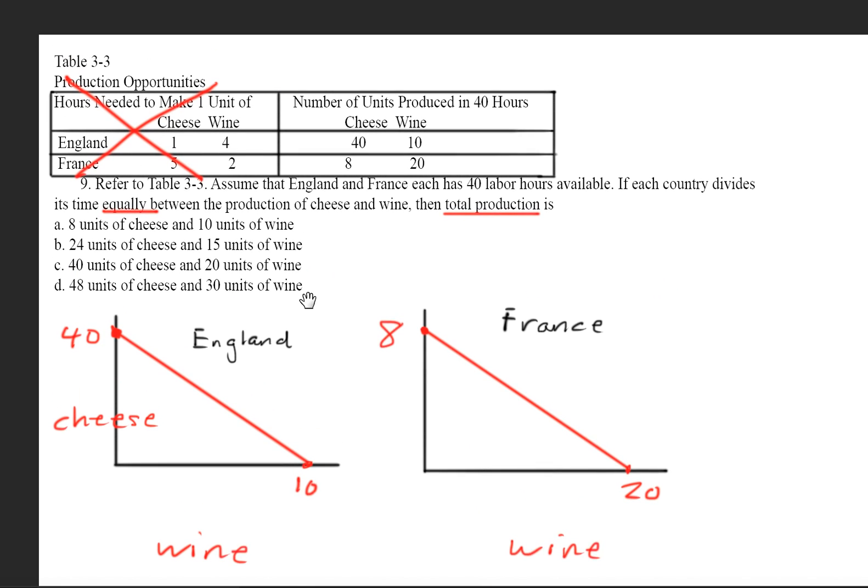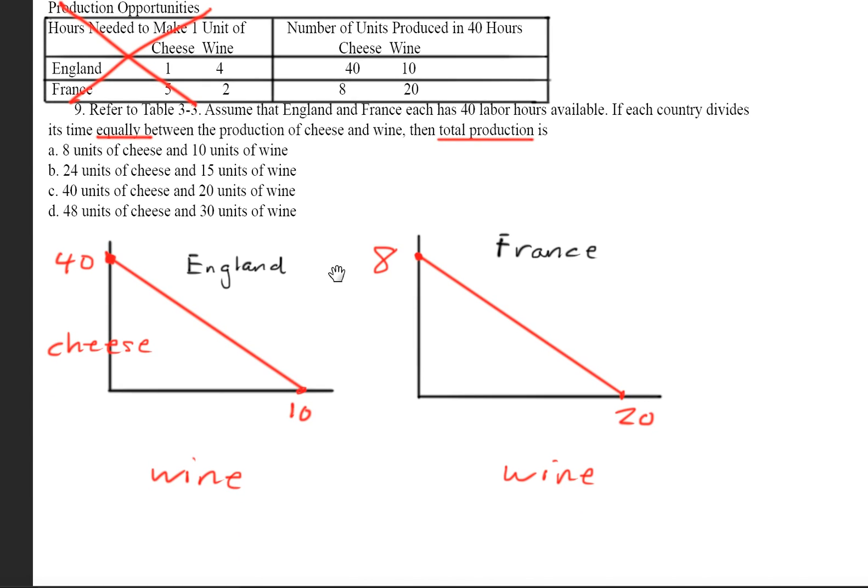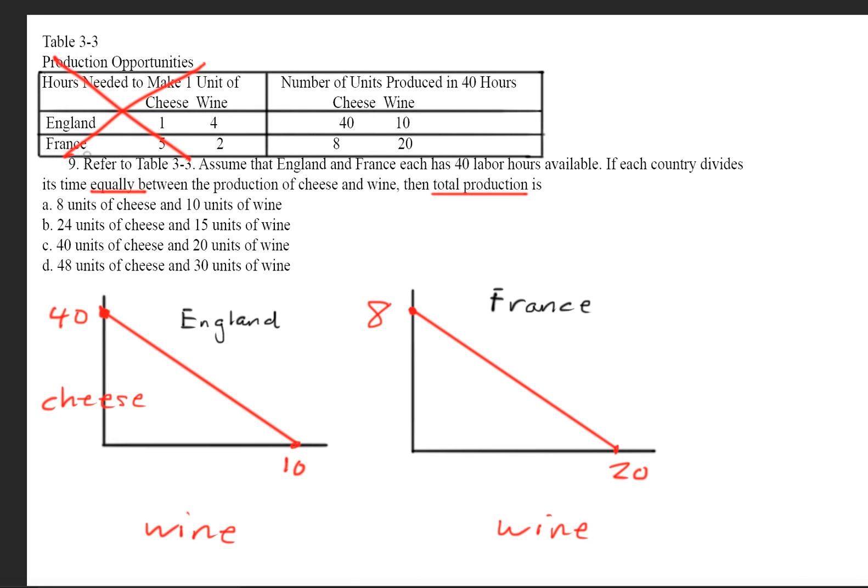So the answer is B. And one important note is we were able to do it this way because it said the country divides its time equally. If they phrased it in some other way or form, we'd have to do something different.